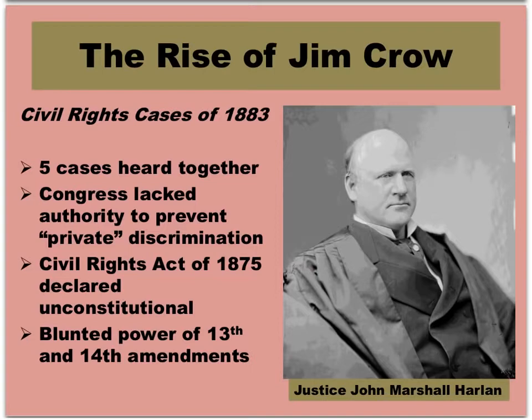The first was called the Civil Rights Cases of 1883 — five similar cases heard together. Basically, it covered civil rights issues regarding discrimination and use of public accommodations. The court held that Congress lacked the constitutional authority under the enforcement provisions of the 14th Amendment to outlaw racial discrimination by private individuals and organizations. It also declared the Civil Rights Act of 1875, passed by the Radical Reconstruction Congress, unconstitutional.